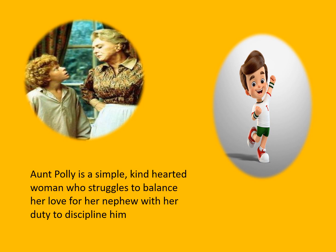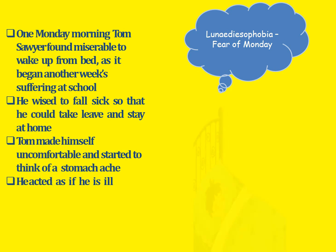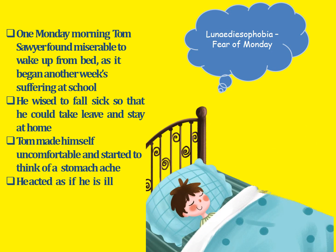Aunt Polly is a very simple and kind-hearted woman who struggles to balance her love for her nephew with her duty to discipline him. She generally fails in her attempts to keep Tom under control because, although she worries about Tom's safety, she seems to fear constraining him too much. Above all, Aunt Polly wants to be appreciated and loved. Let's see what happens when Tom comes up with imaginative tales to avoid school.